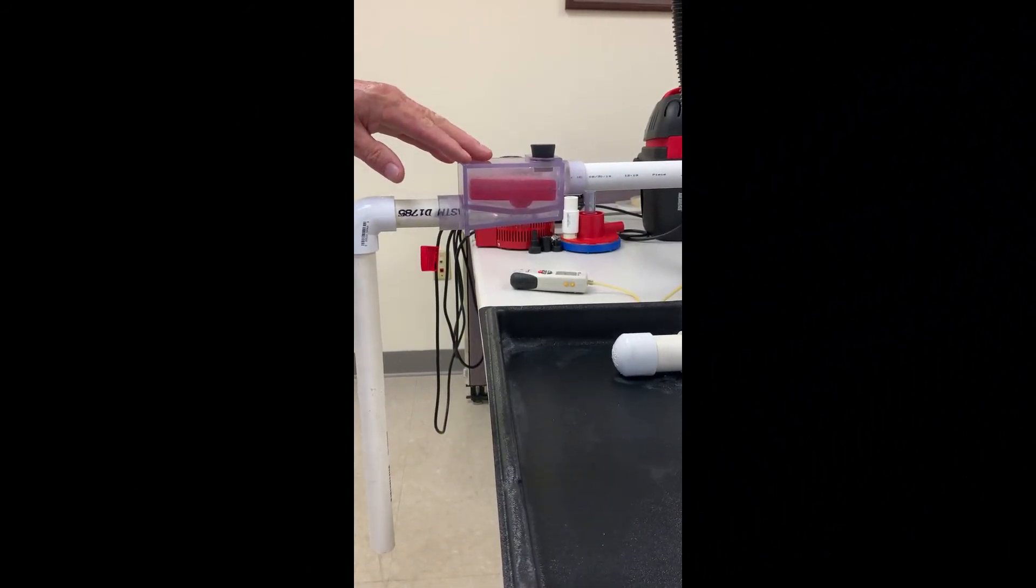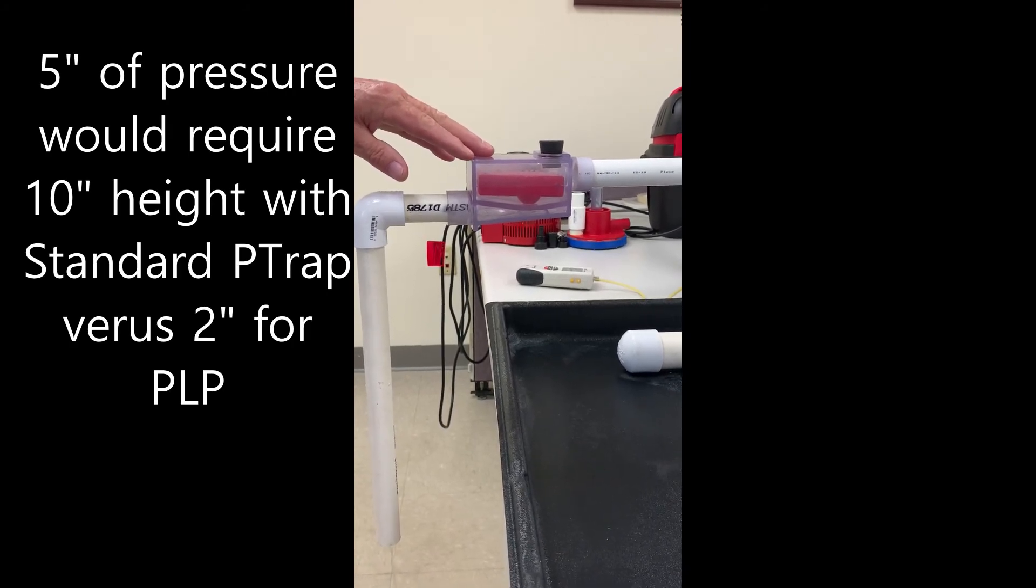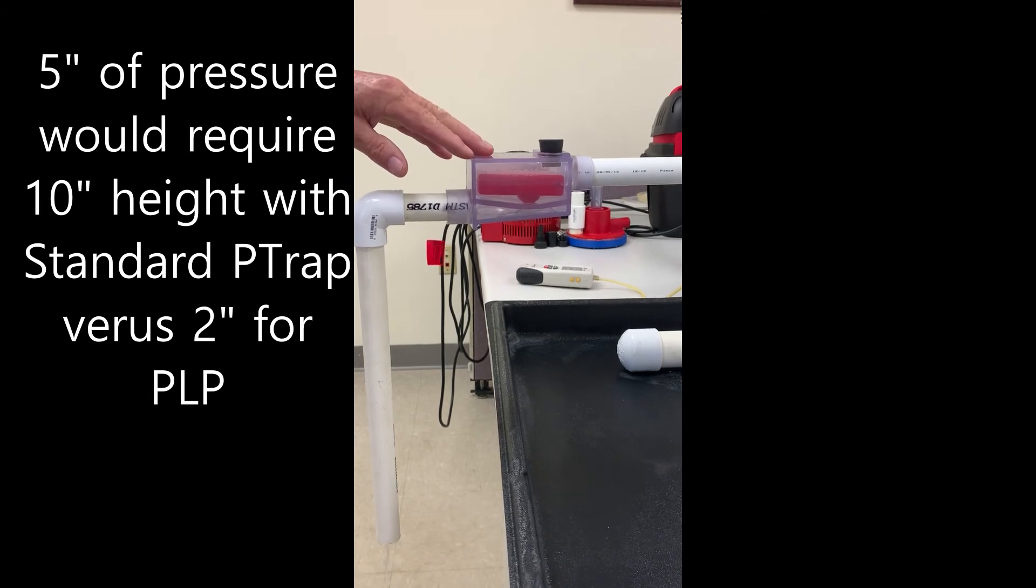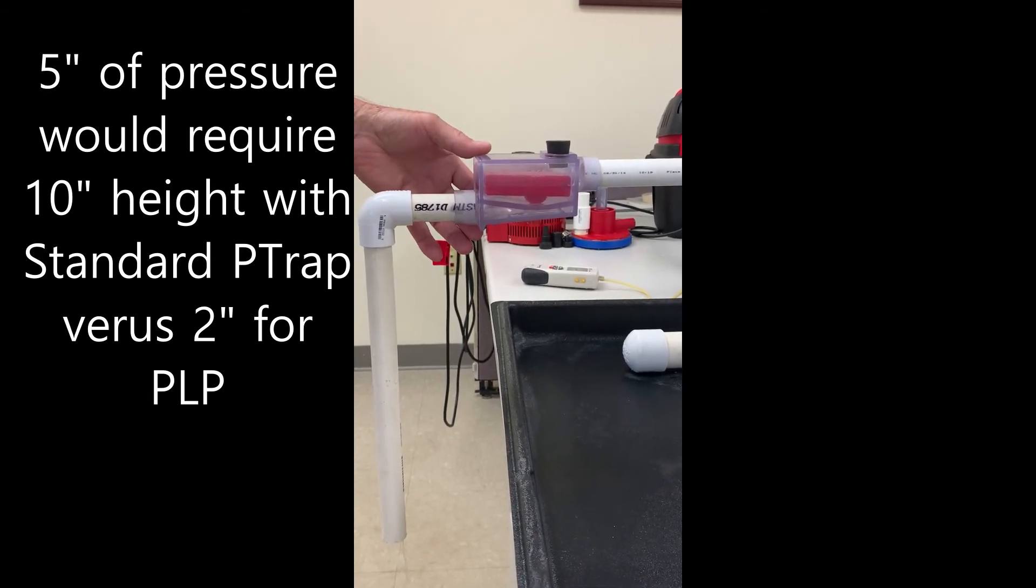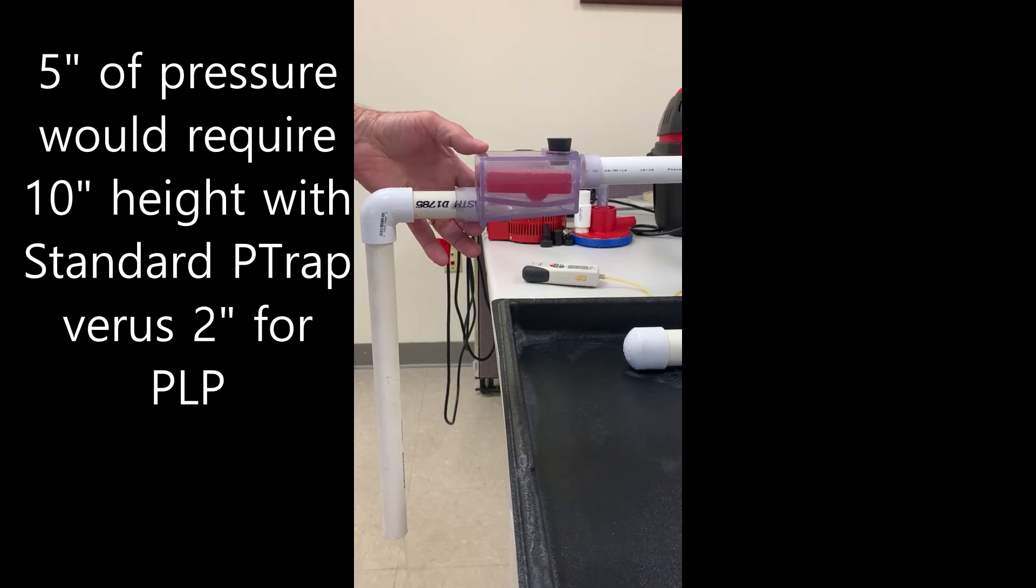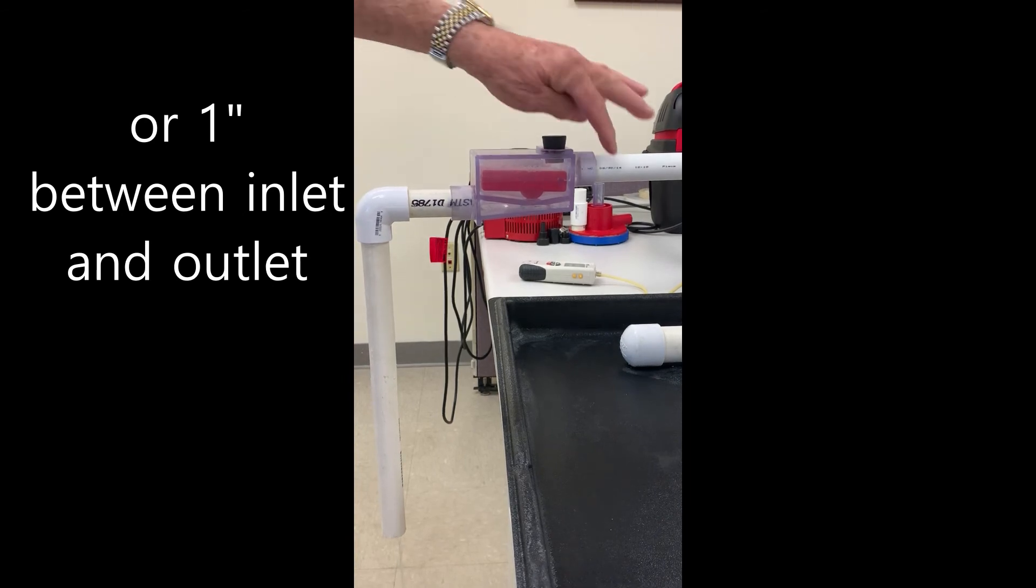Now, if we were doing five inches with a regular trap, you would need probably ten inches of feet trap to handle the same thing, which is much larger than this two inches here, or one inch between the inlet and the outlet.